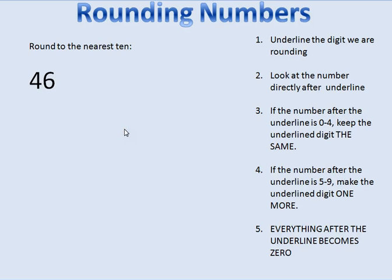We are going to look at rounding numbers — rounding numbers to the nearest ten and rounding numbers to the nearest hundred. There are a couple of steps I look at every single time, and the first thing I do is underline the digit we are rounding.